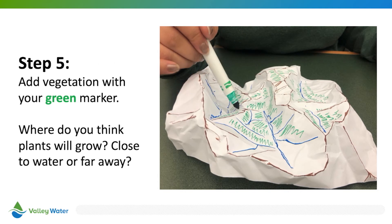Now, using your green marker, we're going to add some vegetation or plants. Where do you think plants will grow — close to the water or far away? As you can see in the picture, all you need to do is put some green color in those areas. You don't need to fully color it in.